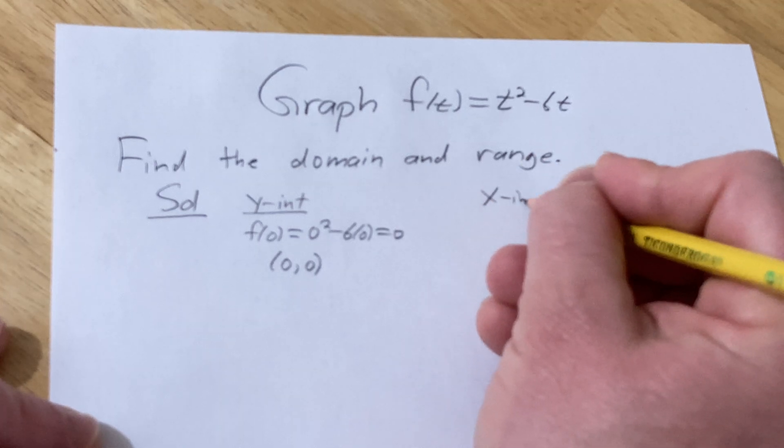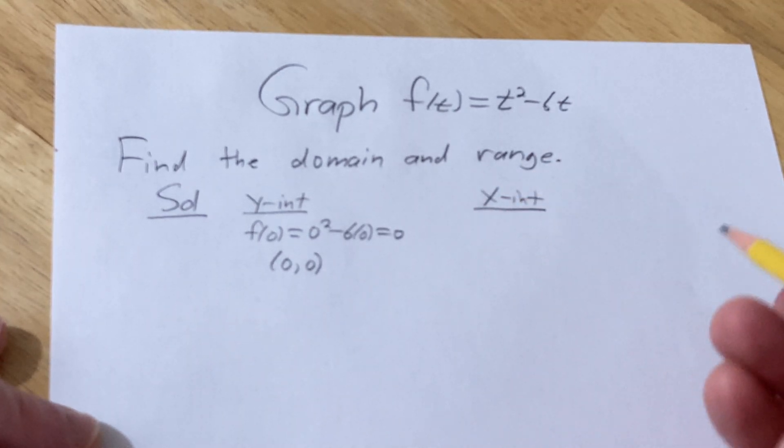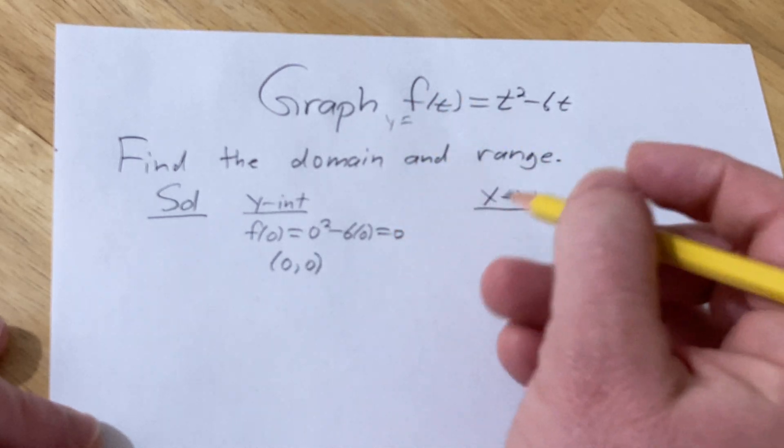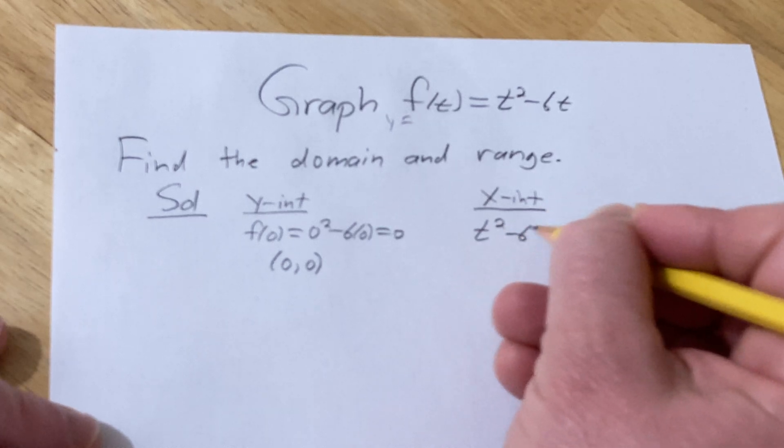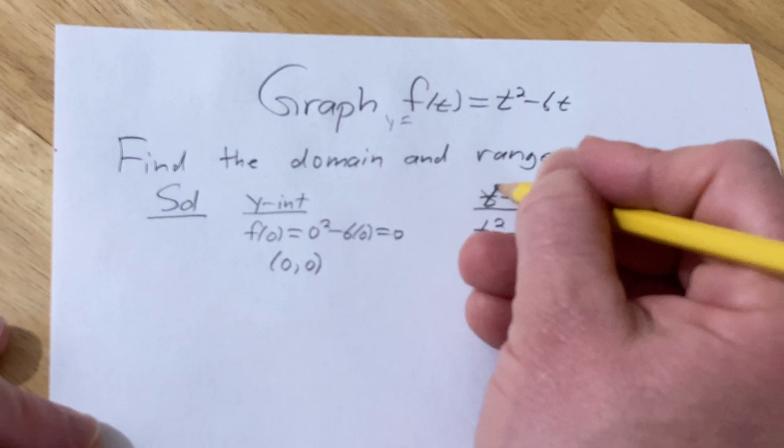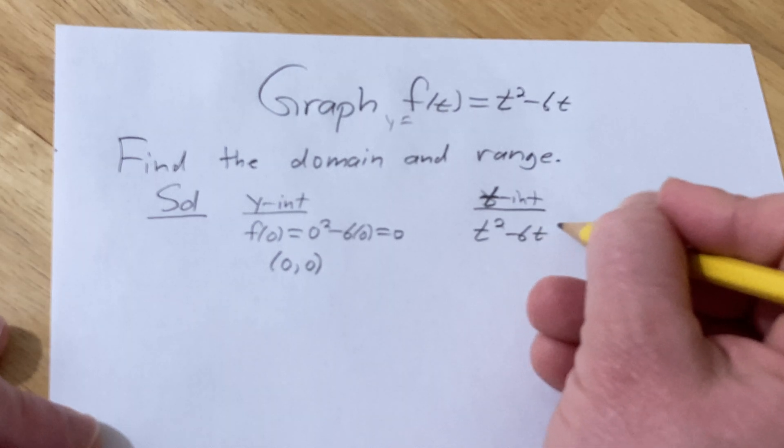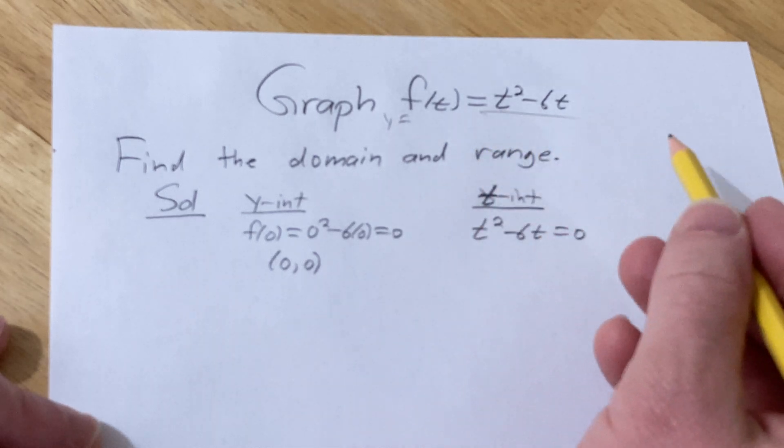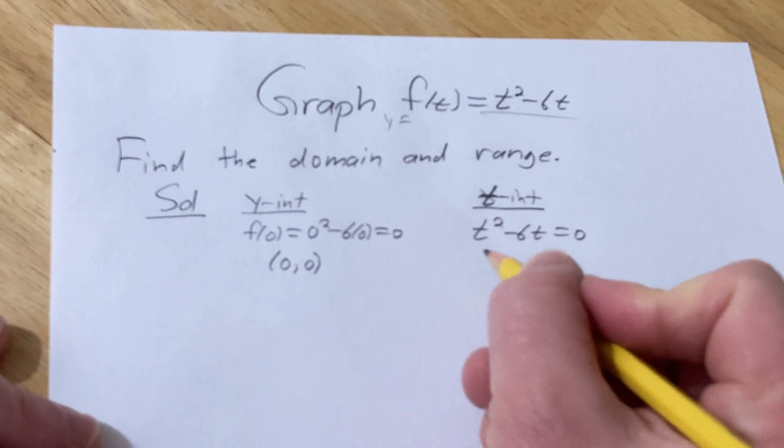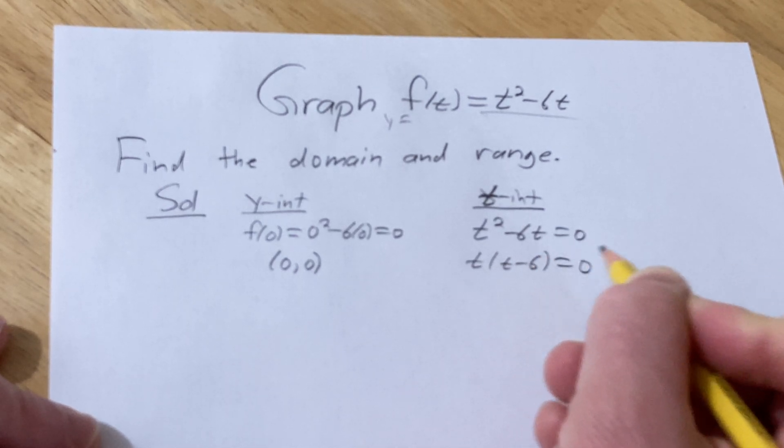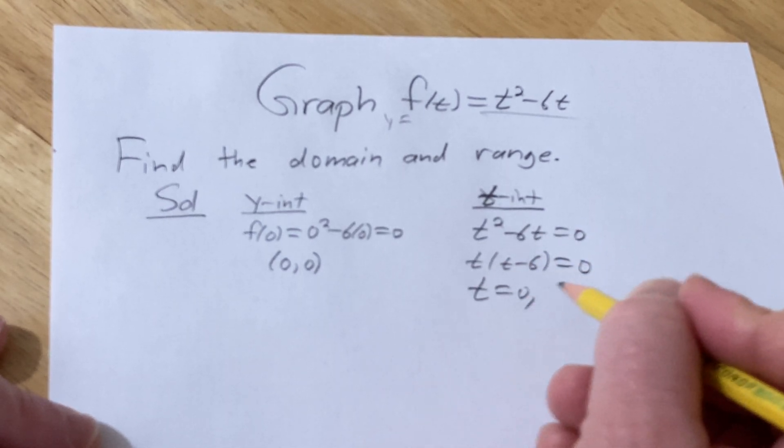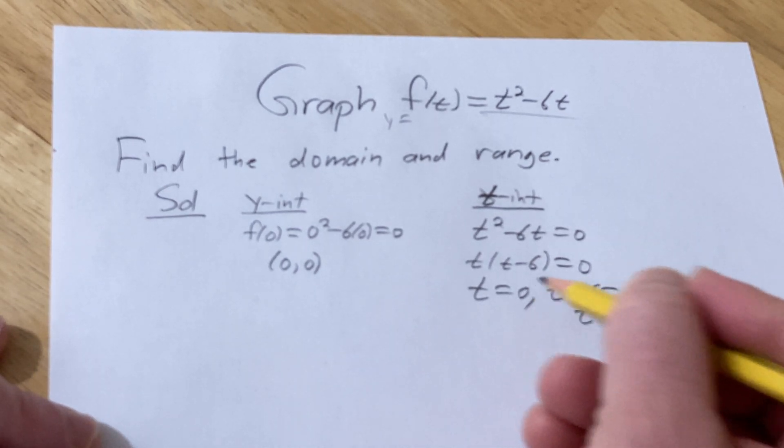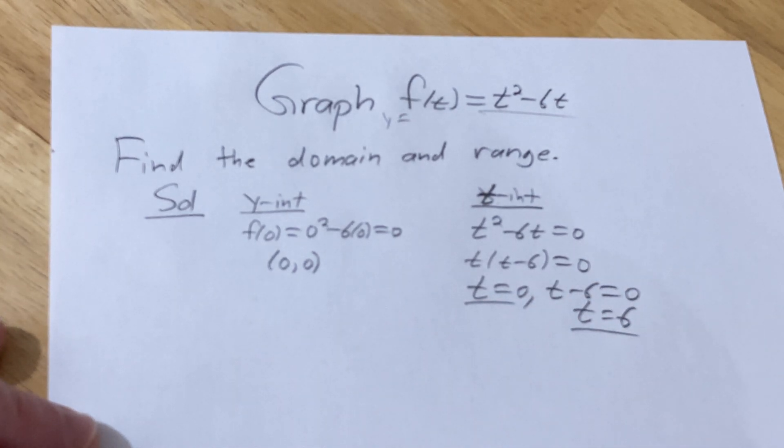Let's find the x-intercepts. To find the x-intercepts you set the other variable equal to zero, which is y in this case. So you set the whole thing equal to zero to find the, not the x-intercept, it's the t-intercept. Glad I caught that because there's no x, it's t. So to find the t-intercept you set the entire thing equal to zero. You can factor this. So now you get t equals zero, t minus 6 equals zero, so t equals 6. So these are going to be your t-intercepts.